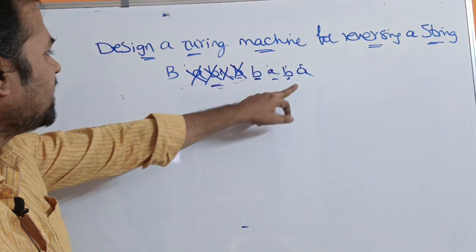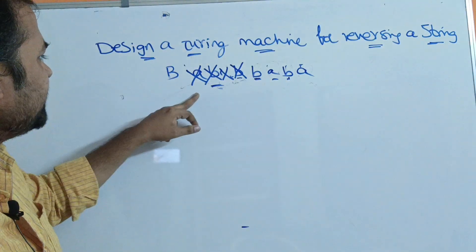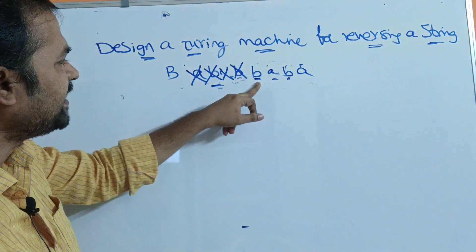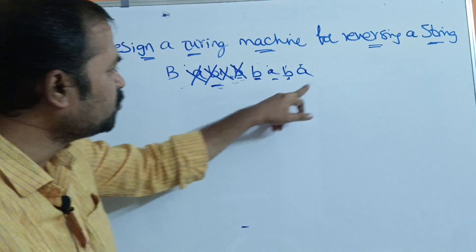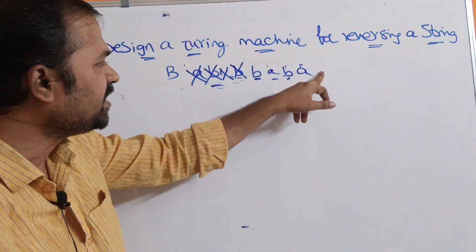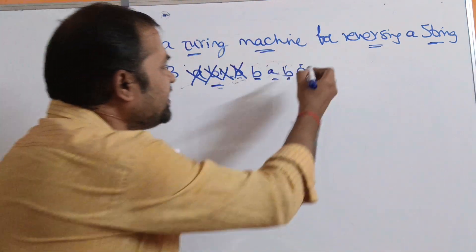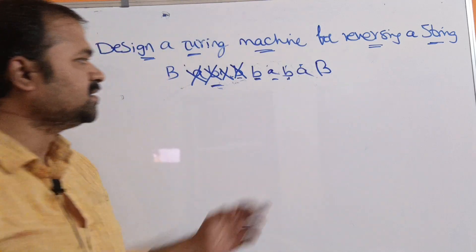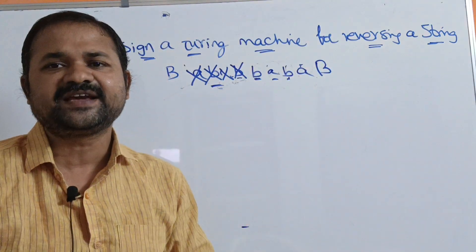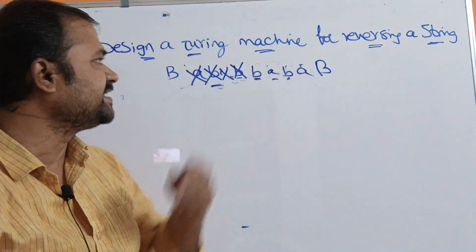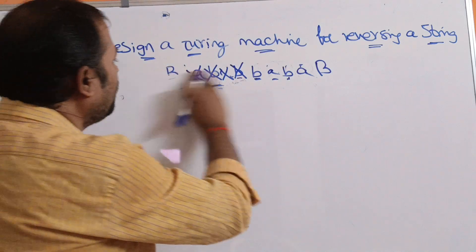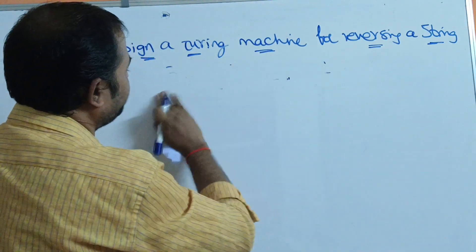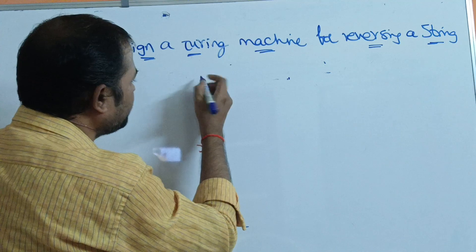Then move the head towards the left. After X, we don't have any characters, so move the head towards the right. Here also, we don't have any characters. We will have some blank symbol, so if we get the blank symbol then we can say that our string is correct. Now let us draw the diagram — the Turing machine.